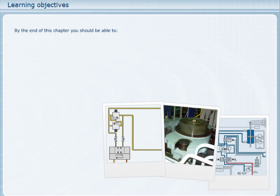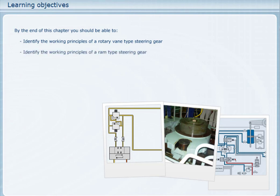By the end of this chapter, you should be able to identify the working principles of a rotary vane type steering gear, identify the working principles of a ram type steering gear, and list the relative advantages of ram and rotary vane type steering gears.